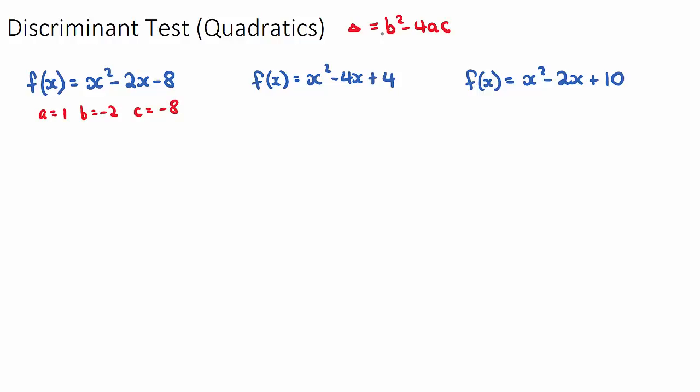If we use our discriminant formula, the discriminant of our quadratic will be b squared. So it's going to be b, which is negative two squared, minus four times a times c, which is negative eight. Our discriminant will be four minus, and then we're going to have four times one times negative eight, and the negative negative and the negative will actually become a positive, and four times eight is 32.